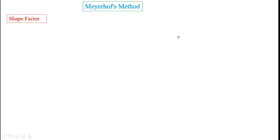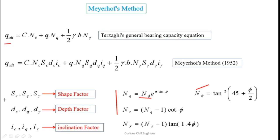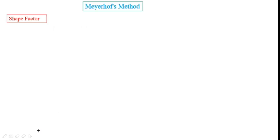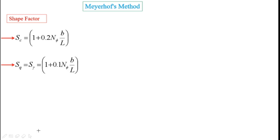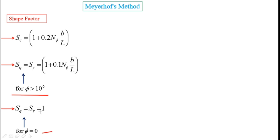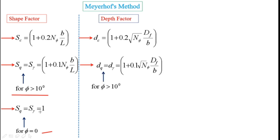Now let's look at the shape factor, depth factor, and inclination factors for Meyerhoff's method. These are the formulas for shape factors — the formula for sq and s-gamma is only applicable when phi is greater than 10. If phi equals 0, then sq and s-gamma equal 1. For depth factors, if phi is greater than 10 use one formula; if phi equals 0, then dq and d-gamma become 1.